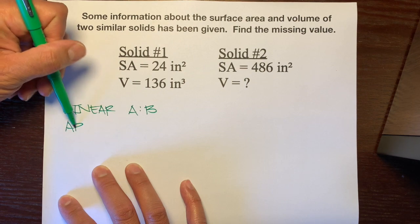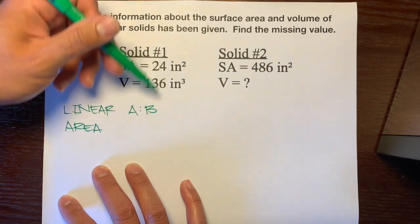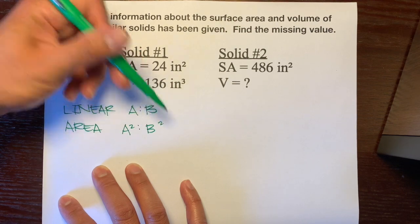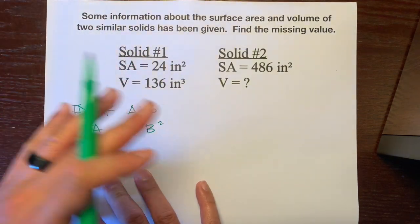There's the area zoom factor or scale factor. You take the linear scale factor and you square it, because that's how many squares fit onto the surface.